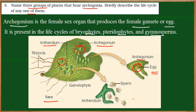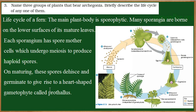Now let us learn the life cycle of a fern. The main plant body is sporophytic in nature, meaning each cell has a diploid (2N) number of chromosomes. The leaves on the lower surface bear brown structures. These leaves are called sporophylls, and the brown structures present on them are called sporangia.